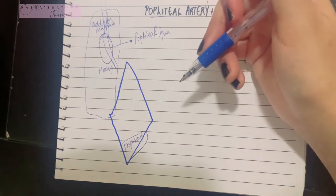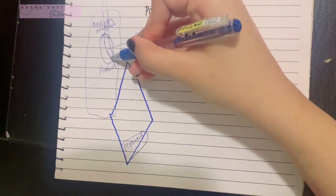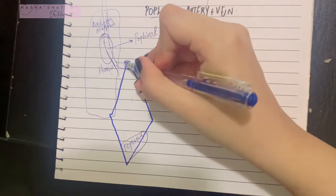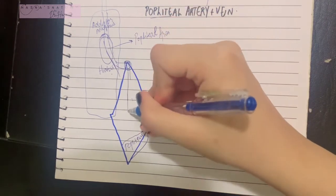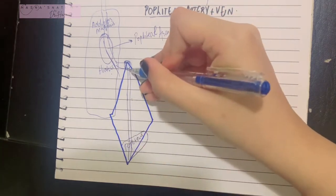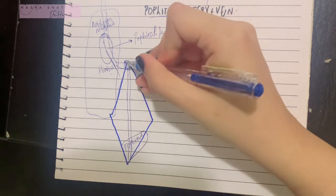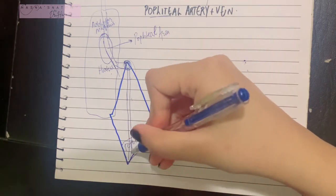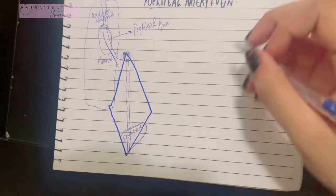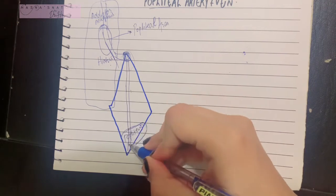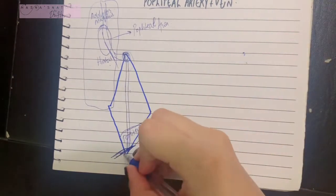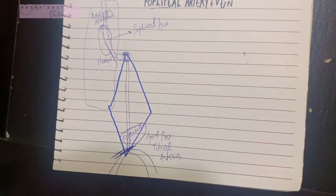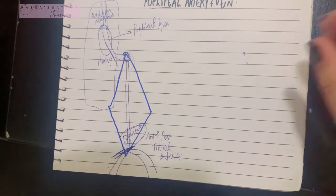The course of the popliteal artery is quite simple. It begins at the hiatus magnus, reaches the superior angle of the popliteal fossa, and traverses the fossa from the superior angle all the way to the inferior angle. Being the deepest content of the fossa, it is most medial in the upper part. It then crosses the tibial nerve to become the most lateral content in the lower part, until it encounters the popliteus muscle.